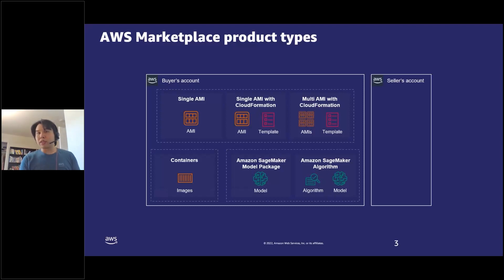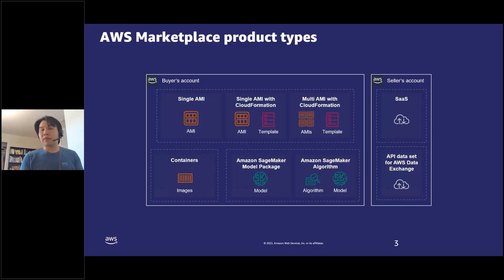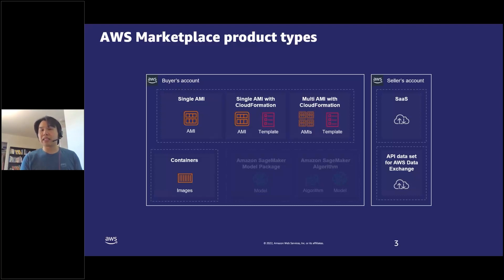Then you have product types that are hosted and maintained by the sellers. These include SaaS, where buyers directly consume the product in the seller's account without deploying any infrastructure in the buyer's account. There's also the API datasets for AWS Data Exchange, which is a feature in AWS Marketplace where data providers can sell their data in various ways, including via an API that they host. Today we're going to focus mostly on AMIs, containers, SaaS, and the API datasets.